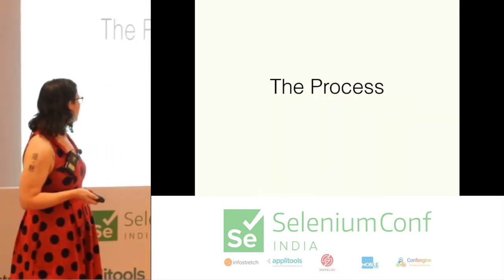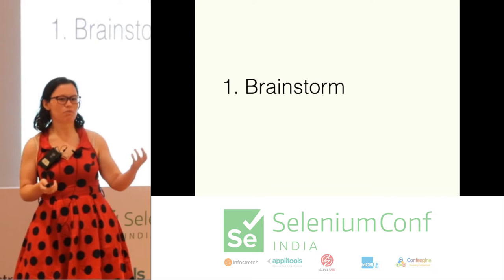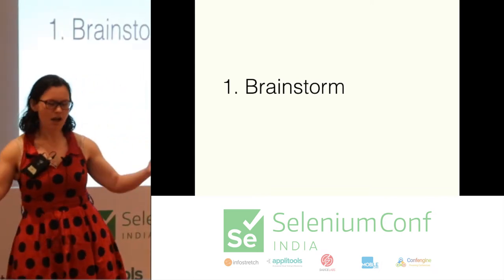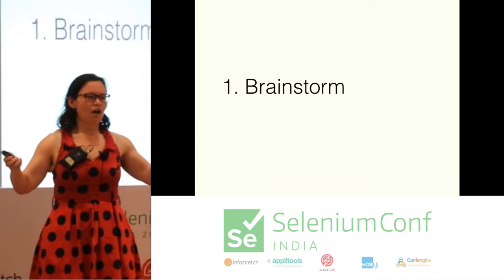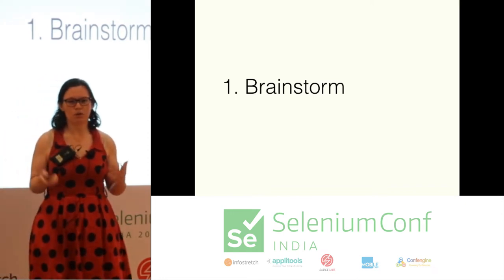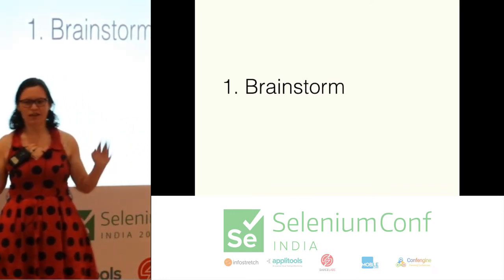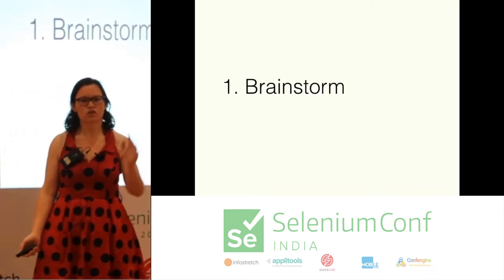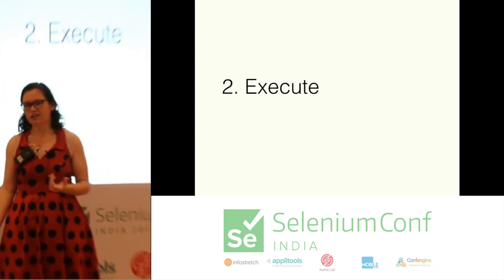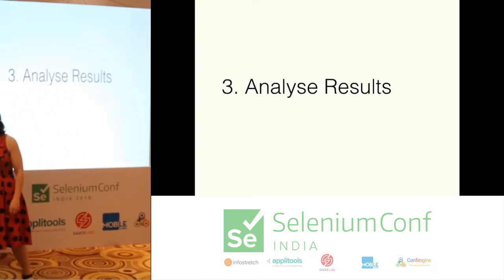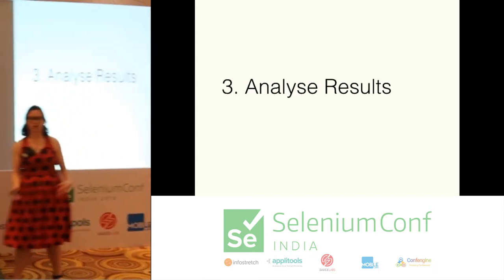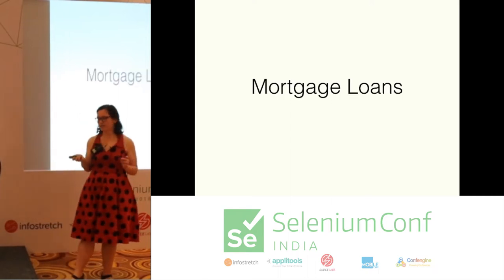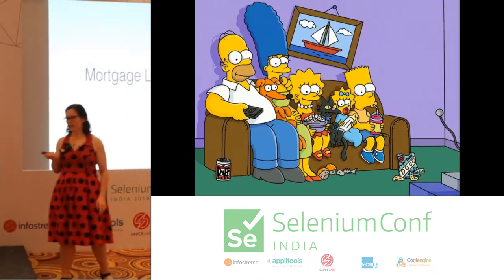So what is the process? You might start with a brainstorming activity with your business and sales. You might ask them: what are the stories our users have done? What are some of the most amazing things our users have really tried to do? Where is the drama in our product? You execute the exercise and then analyze the results. You might want to redo it. For example, we're going to use the Simpsons with a mortgage loan application.